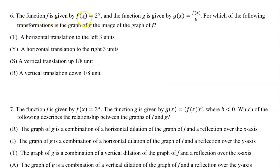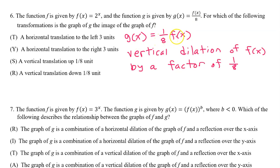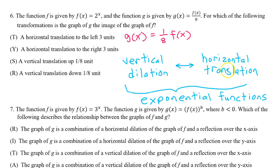Number 6: the function f is given by f(x) equals 2 to the x power, and g(x) equals f(x) divided by 8. For which transformation is the graph of g the image of the graph of f? Well, f(x) divided by 8 is the same as 1 over 8 times f(x). A 1 eighth in the front is a vertical dilation, so g(x) is a vertical dilation of f(x) by a factor of 1 eighth. Only problem is, that's not one of the answer choices. We learned that every vertical dilation of an exponential function can be rewritten as a horizontal translation, so that's what we are going to do. We already know the answer will be T or Y, a horizontal translation.